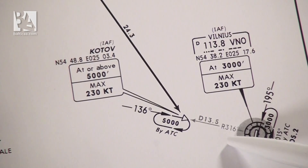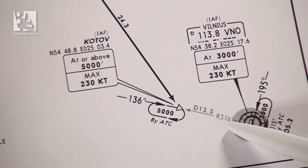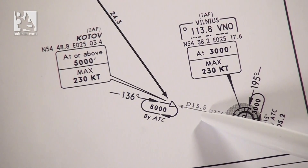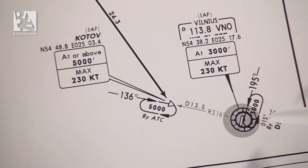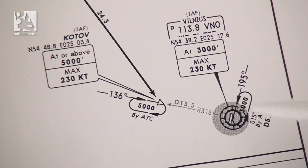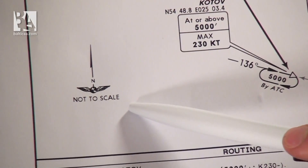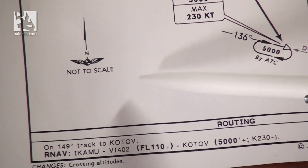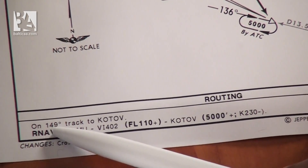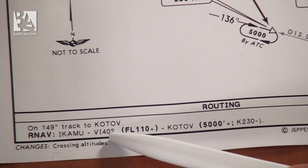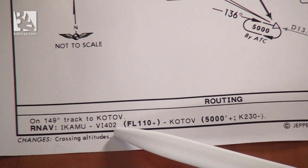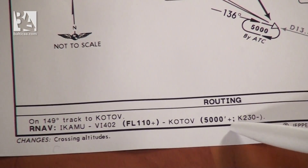Then we have some additional information: KOFFI is on a radial of 316 degrees from Victor November Oscar VOR at a distance of 13.5 nautical miles, and should it be required, we could make another hold over Victor November Oscar with an inbound course of 195 at 3,000 feet. To the left we have an indication that the chart is not to scale. Below we have the routing which basically says: on 149 degrees track to KOFFI. That is the general routing. For RNAV we have the waypoints ICAMU, Victor India 402, and then KOFFI with the altitude restrictions written here.